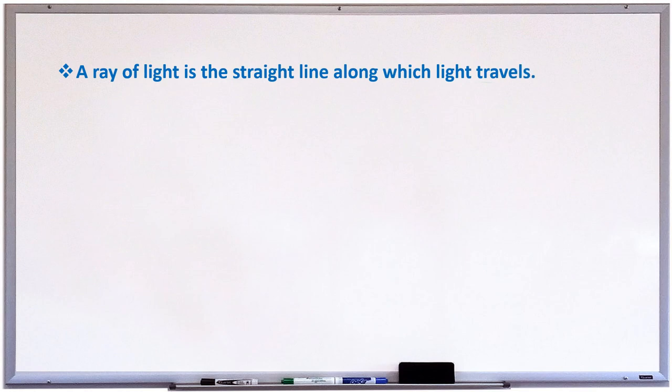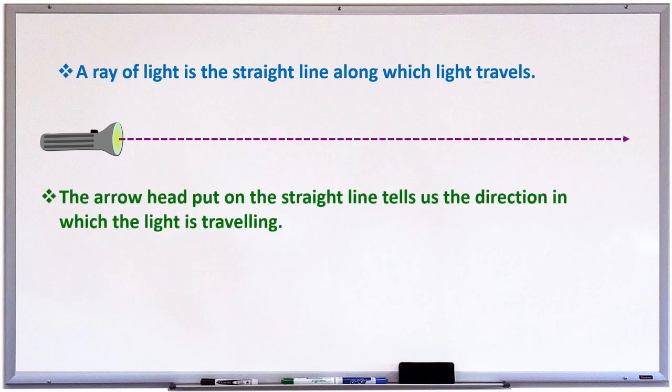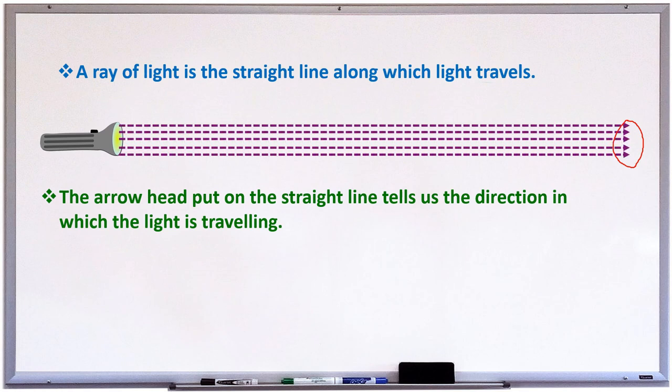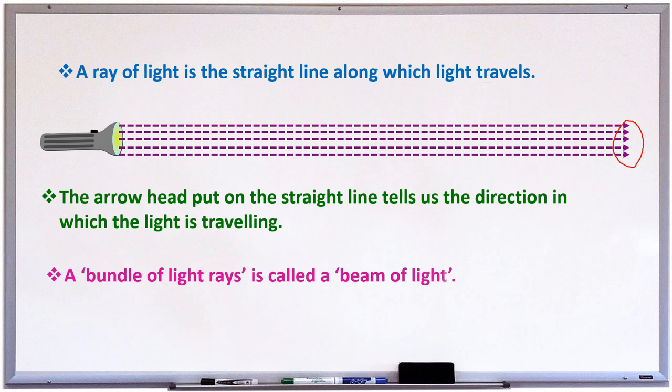A ray of light is a straight line along which light travels. Which means, look, observe here, light travels in a straight line. The arrow head put on the straight line shows the direction of light. A bundle of light rays is called a beam of light.